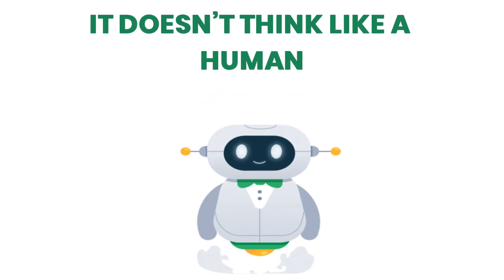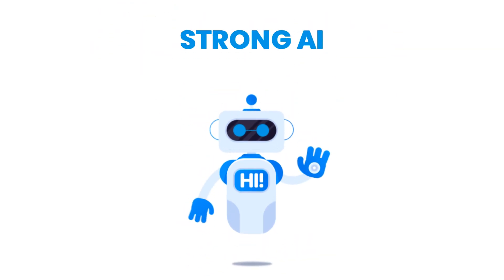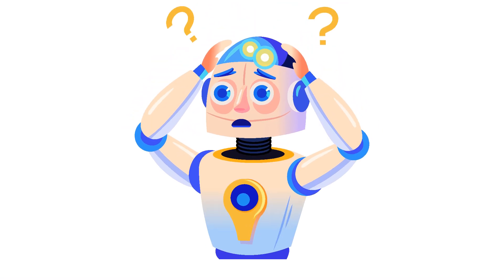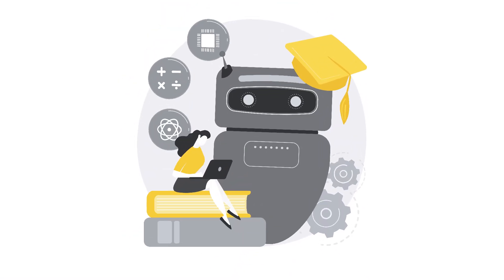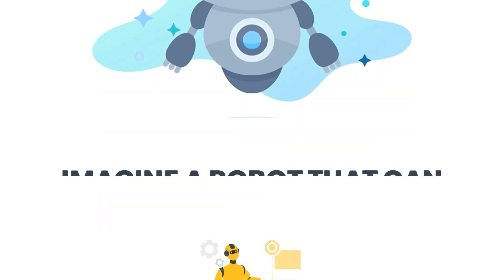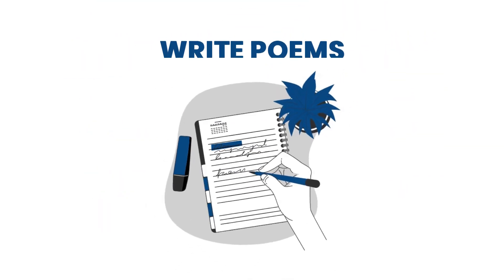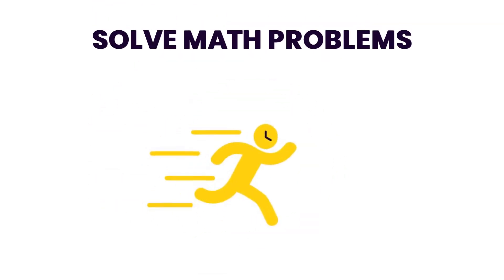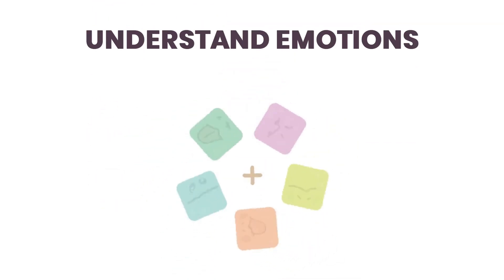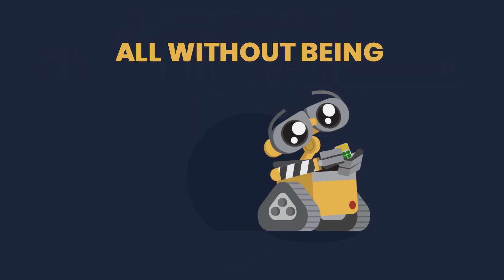Now let's talk about general AI, or strong AI. This is the dream — a machine that can think, reason, and learn just like a human across any task. Imagine a robot that can write poems, cook a meal, solve math problems, and understand emotions, all without being programmed for each task.